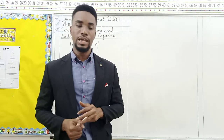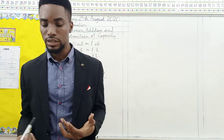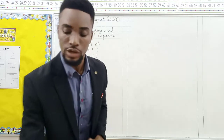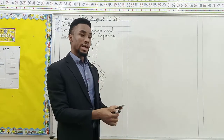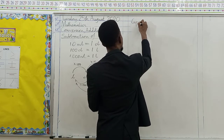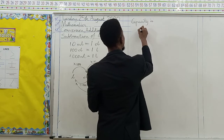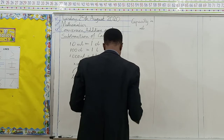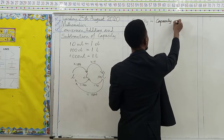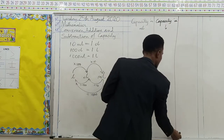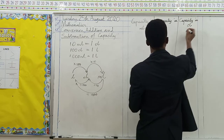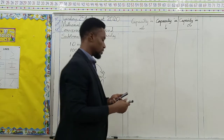I'm going to give you some capacities in milliliters, some in liters, and some in centiliters, and we are going to try to convert between them. Let's draw a table. On this column we are going to have capacity in milliliters, and on this side of the table we are going to have capacity in centiliters.